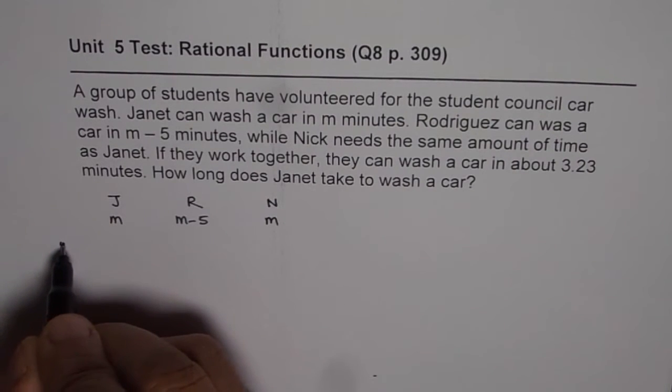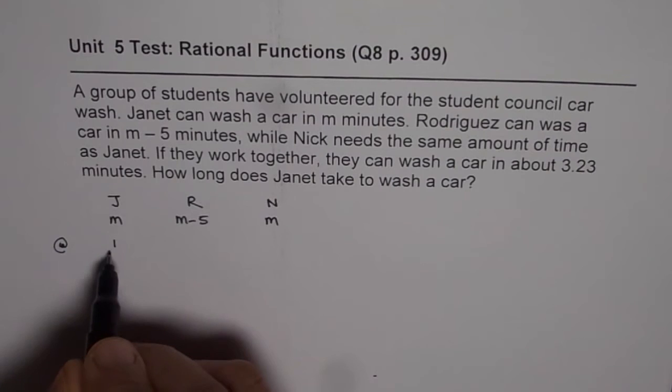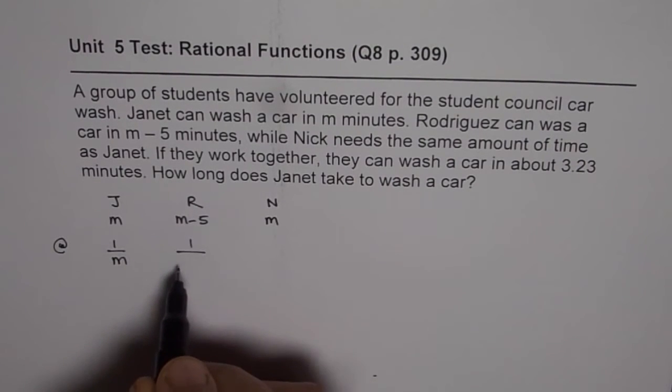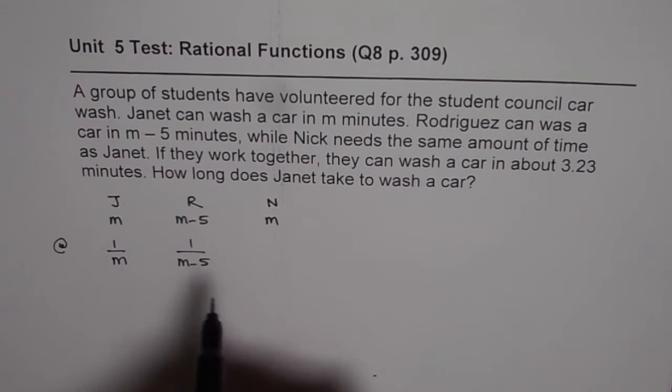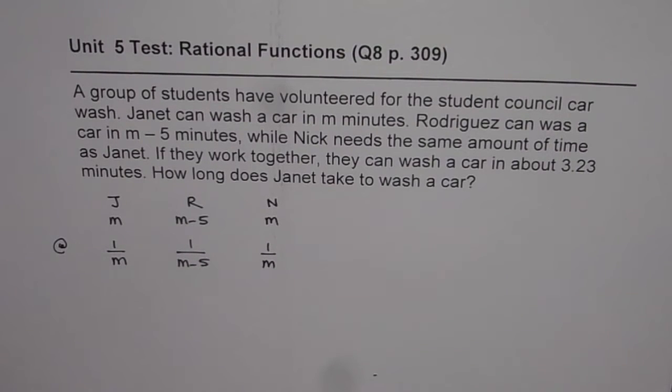What we need to find here is, what is the rate of their doing work? That is, in 1 minute, how much job is done? In 1 minute, Janet can do 1 over M, Rodriguez can do 1 over M minus 5, and Nick can do 1 over M amount of job.